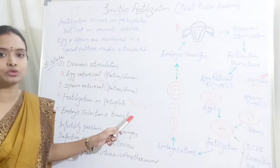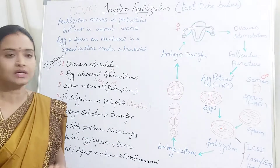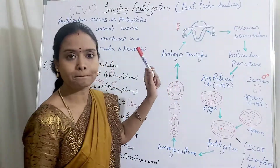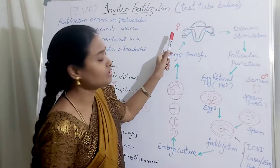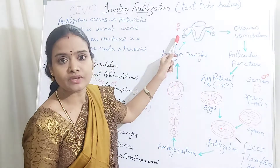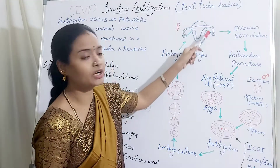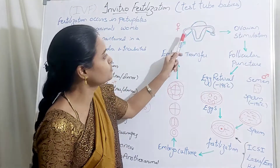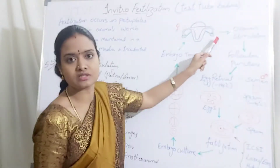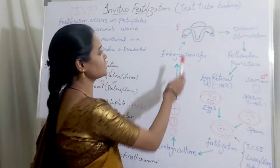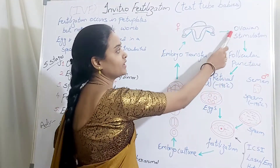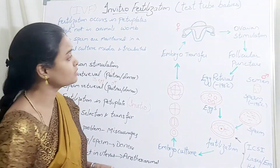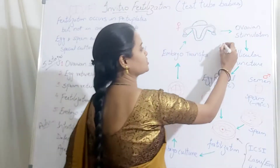Then only you select that embryo and transfer it into the uterus of the female. Let us see the diagrammatic representation. This is the female reproductive system — the uterus, fallopian tubes, and the ovaries. In the first stage, ovarian stimulation, the female is given tablets or injections because of which she will produce more than two eggs per estrus cycle.